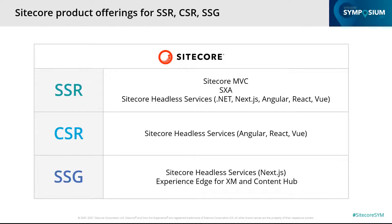So let's see where Sitecore fits into these rendering options. For server-side rendering: Sitecore MVC, SXA, and Sitecore Headless Services with .NET, Next.js, Angular, React, and Vue are all capable. For client-side rendering: Sitecore Headless Services with Angular, React, and Vue. For static site generation: Sitecore Headless Services with Next.js. Next.js is capable of both server-side rendering and static site generation. Combining this with Experience Edge for XM and Content Hub lets you pull in items during build time, making for a really great static site generation experience.